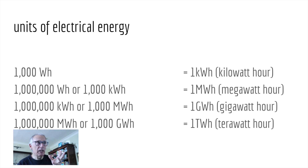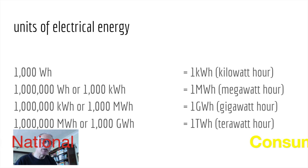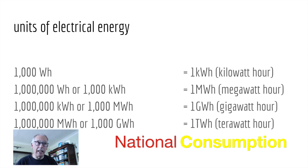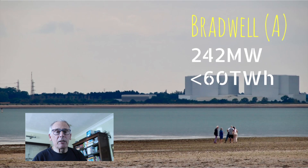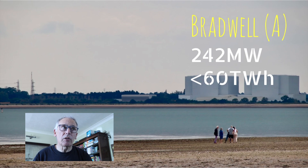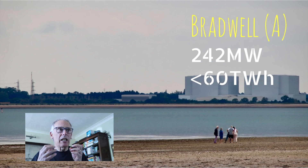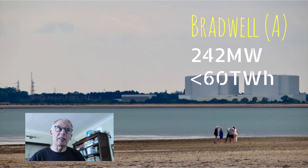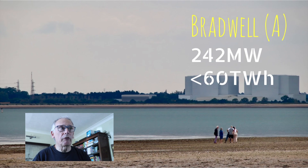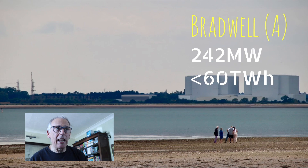Typically for nuclear power stations we talk about megawatts and gigawatts, and for annual electricity consumption we talk about terawatt-hours. Looking at Bradwell — which we now call Bradwell A — its power rating was 242 megawatts. It was originally rated at 300 megawatts but had to be downgraded due to some issues. Over its lifespan of 40 years it produced just under 60 terawatt-hours of electricity.